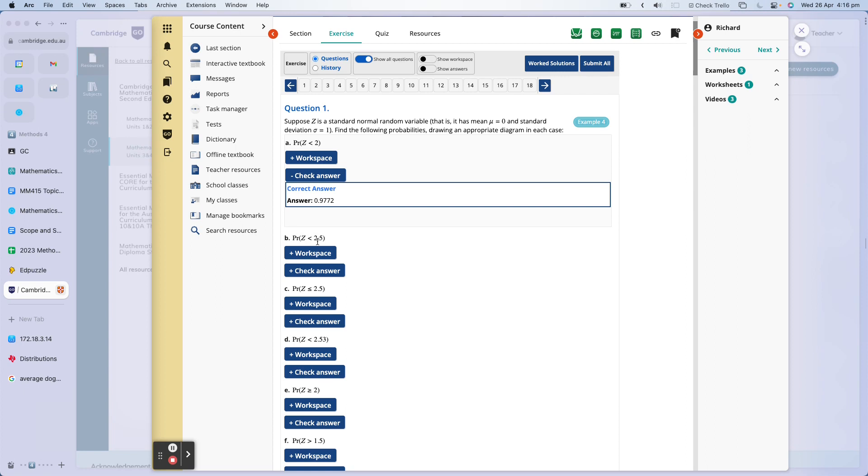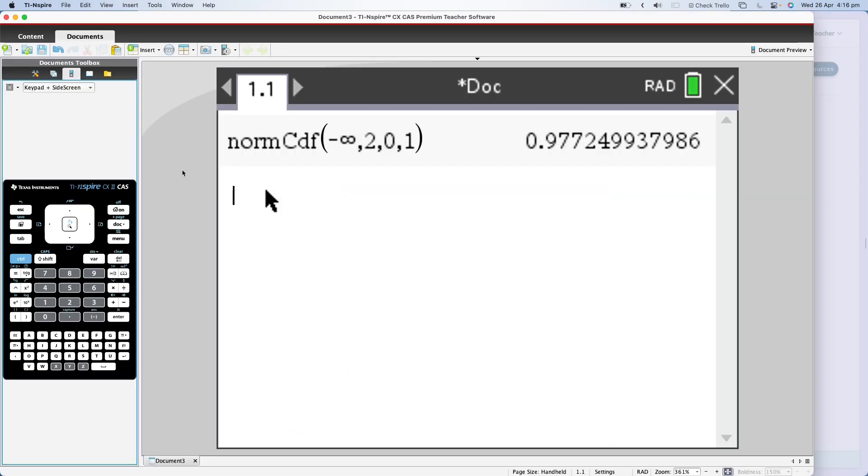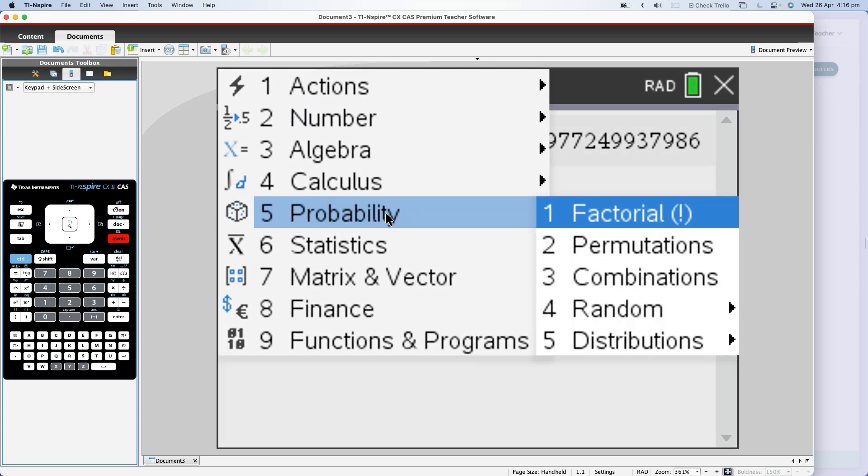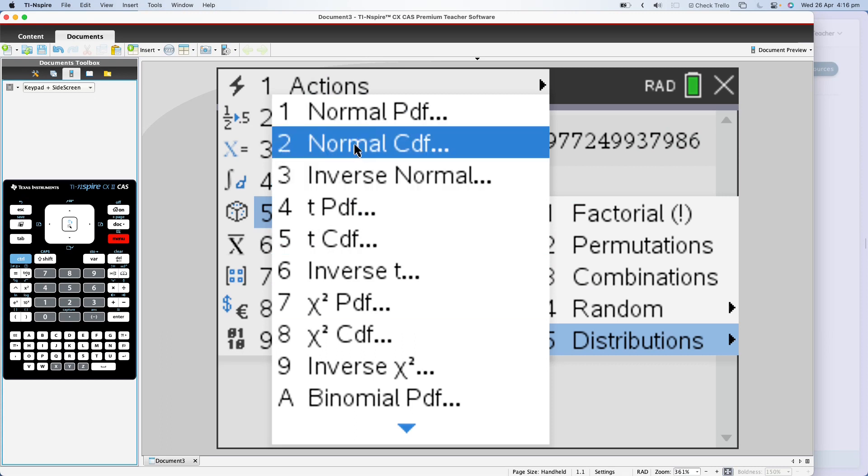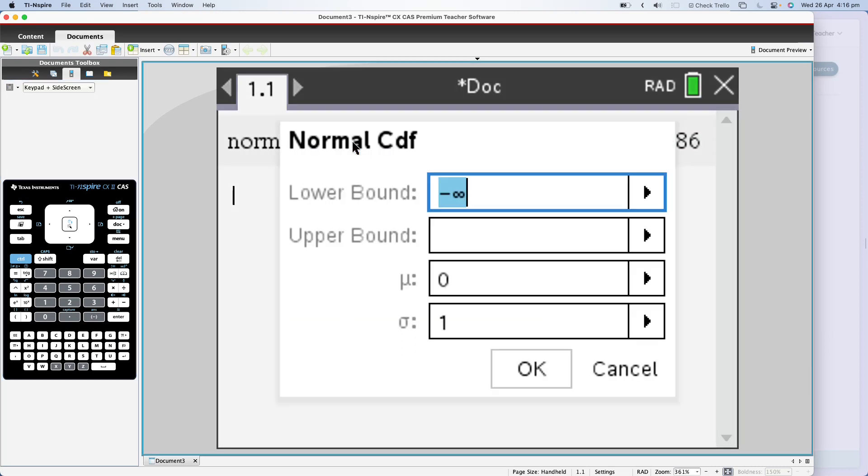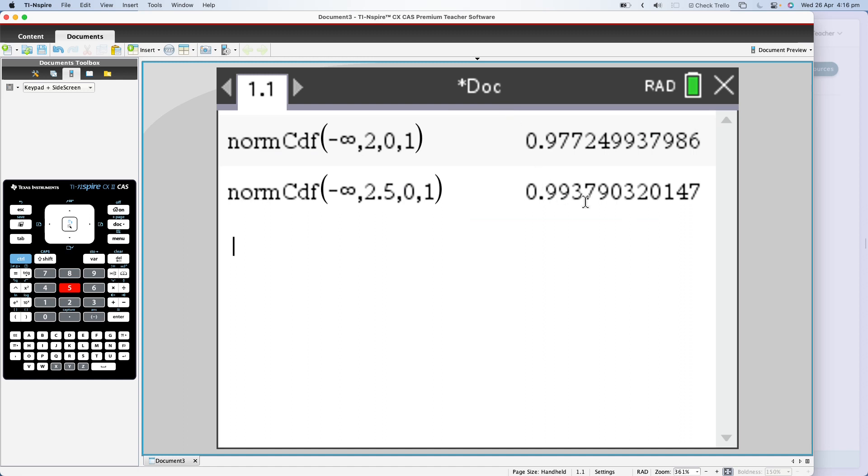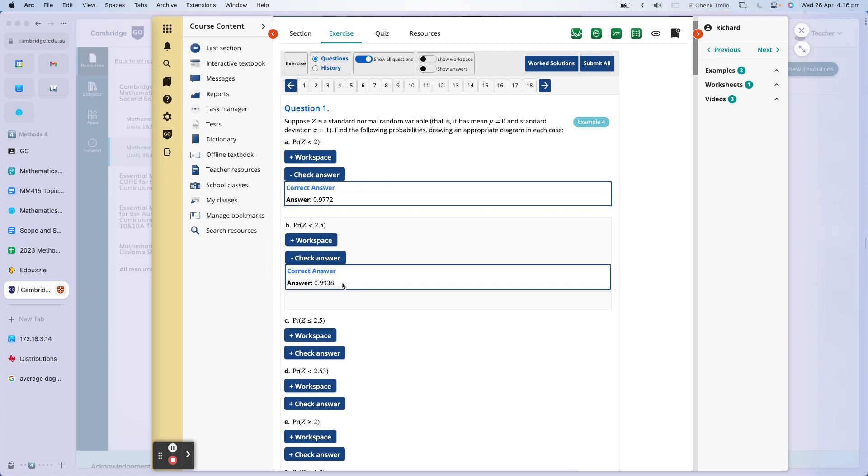The next thing we're going to look at is B, which is the probability that Z is less than 2.5, basically the same as we did before. So we go menu, probability, distributions, normal CDF. We leave the lower bound as negative infinity and put an upper bound of 2.5. And we get 0.99379. So the answer for this one is 0.99379. I've done a couple more decimal places. If I go to my answers, we can see the answer is 0.9938. That's the same as my answer.